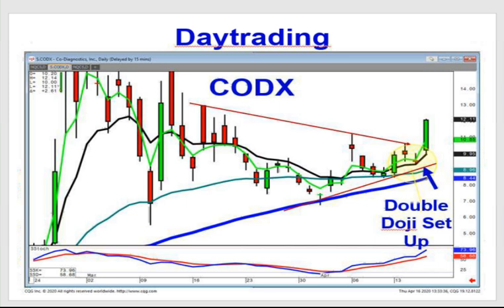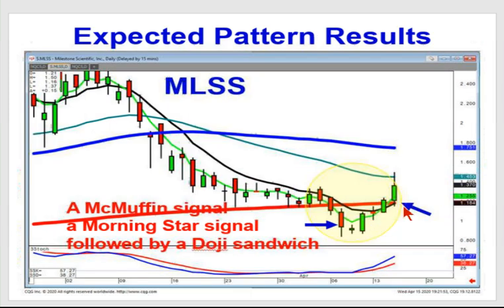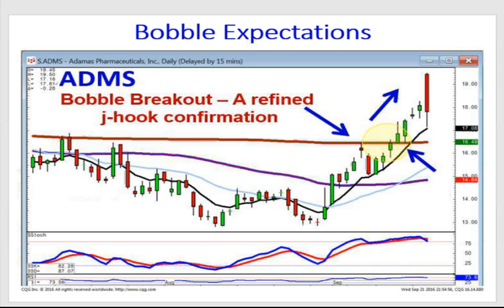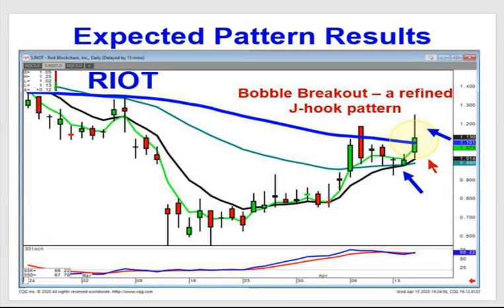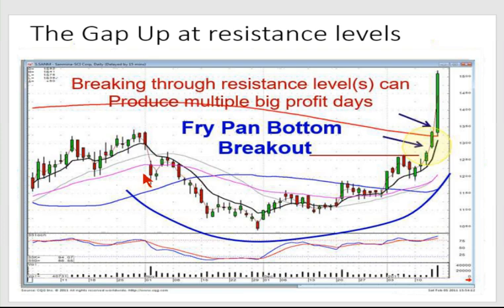Basically we're finding the breakouts of different patterns. There's our McMuffin. If it opened positive the next day, there was a good probability it was going to trade positive. We know what a bobble breakout is — that's basically a J-hook pattern where you can actually see where the breakout is, and you know that you're going to be trading in a high probability direction. On Riot, there was another bobble breakout setting up, so we can visually find the patterns that have the big breakouts.